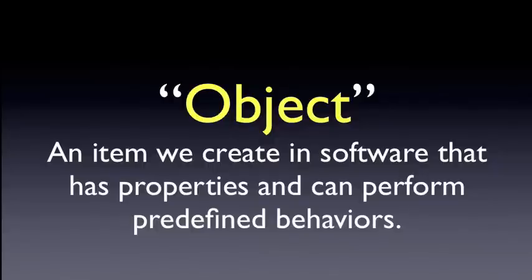Now we need to understand what those reference variables are actually referencing. Primitive data can't be broken down any further — it's very discrete. An integer defines an integer such as the number 7, and also defines that we can add, subtract, multiply, and divide. Moving over to objects, an object is a piece of information — it is data — and we can perform specific behaviors on that data. The data will have some subset of properties, and we'll be able to ask that object to perform behaviors for us.